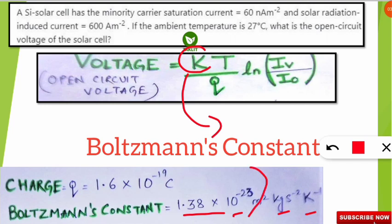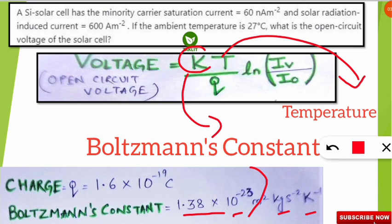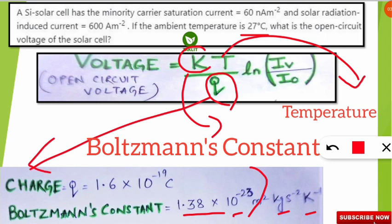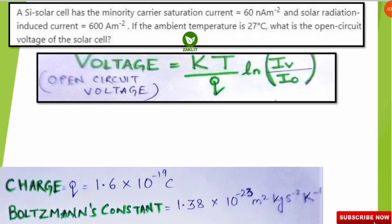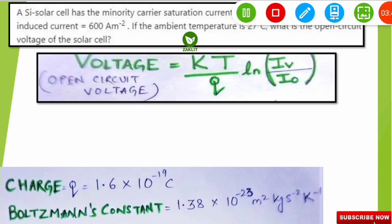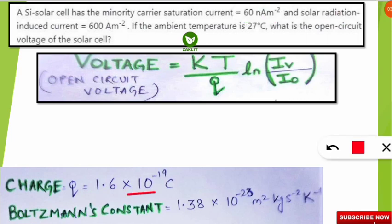T is the temperature, which we have converted to 300 Kelvin. In the denominator, q is the charge of the electron, with a value of 1.6 × 10 to the power minus 19 Coulombs. So remember: Boltzmann's constant is 1.38 × 10⁻²³, and the electron charge is 1.6 × 10⁻¹⁹ Coulombs.